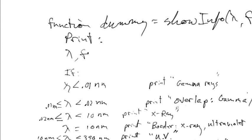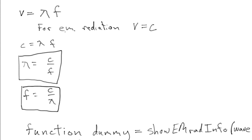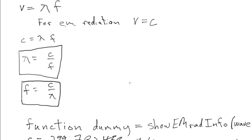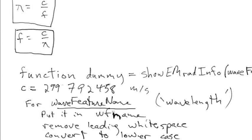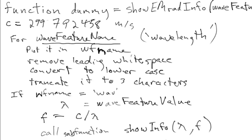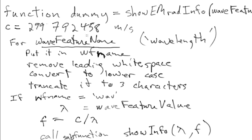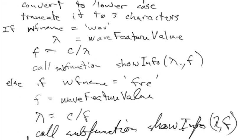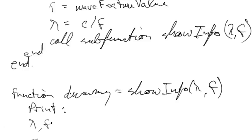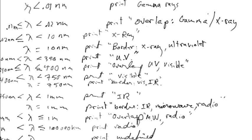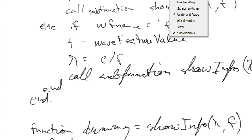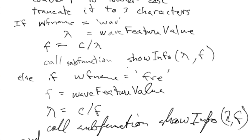It was mostly about writing up the code. The algebra was trivial — didn't even require a picture — first semester stuff except for the speed of light. My plan is one main function that calculates the other wave feature, and then calls a subfunction that displays everything, printing both values and what type of EM radiation it is. The output formatting will come in video number two.